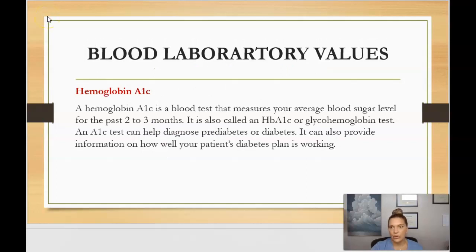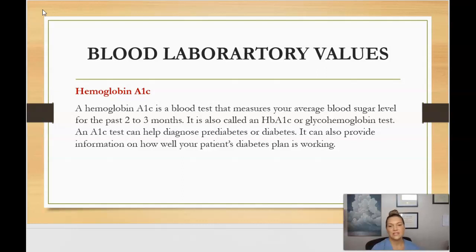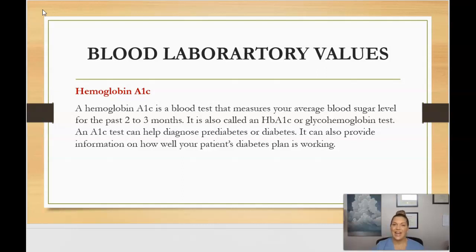Moving on to the hemoglobin A1c. The hemoglobin A1c is the blood test that measures your average blood sugar level for the past two to three months. The A1c test can help diagnose pre-diabetes or diabetes, and it can also provide information on how well your patient's diabetes management plan is working.